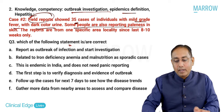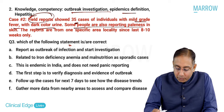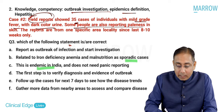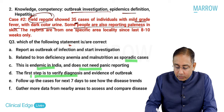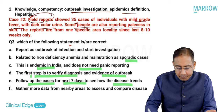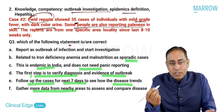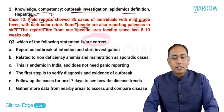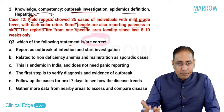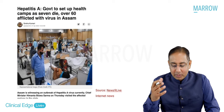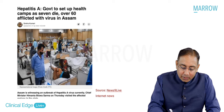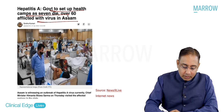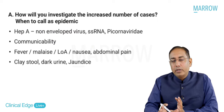The question is: which of the following statements are correct? The options include: report as outbreak and start investigation; related to iron deficiency anemia and malnutrition as sporadic cases; this is endemic in India and does not need panic reporting; the first step is to verify diagnosis and evidence of outbreak; follow up cases for next seven days to see disease trends; or gather more data from nearby areas. This case is directly based on a news report about Hepatitis A in Assam, where 7 died and 60 were affected.